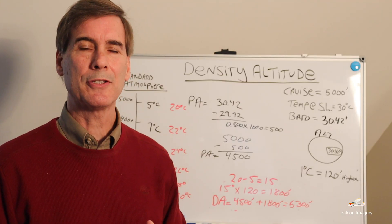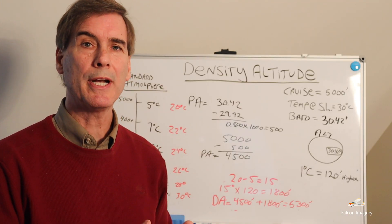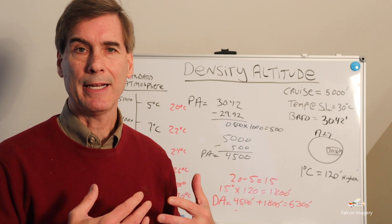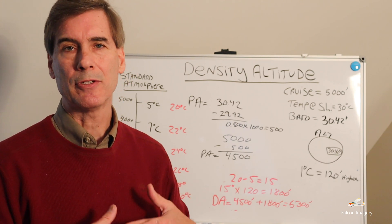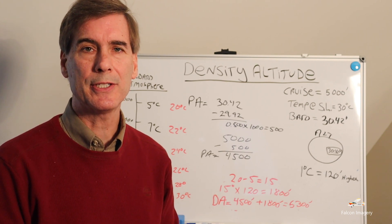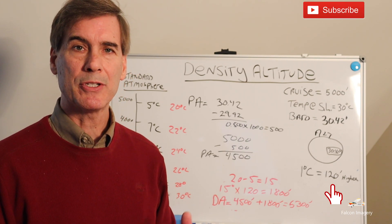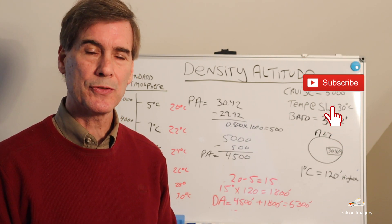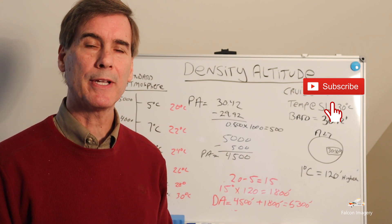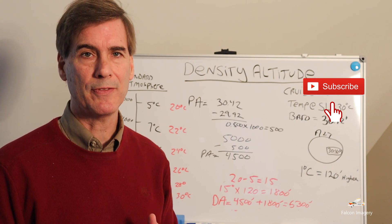So that's density altitude. Hopefully now you have a better understanding of what it is, why we're so concerned about it, and how to calculate it or find it using an E6B whiz wheel. Hopefully you found this video useful. If you did, make sure you hit the like button, subscribe to the channel, and hit the notification bell so you get notified when the next video comes out.